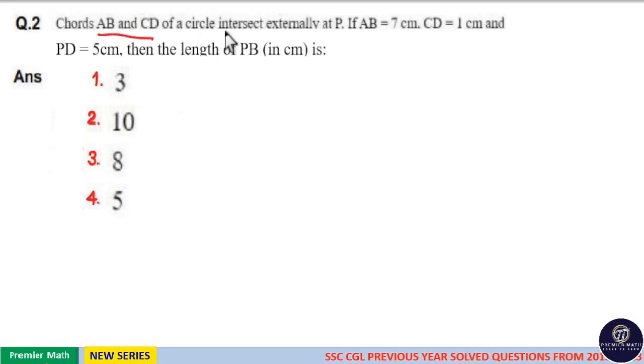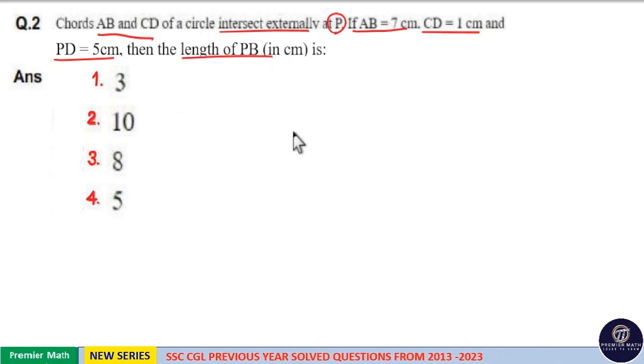Chords AB and CD of a circle intersect externally at B. If AB equal to 7 cm, CD equal to 1 cm and PD equal to 5 cm, then the length of PB in cm is?